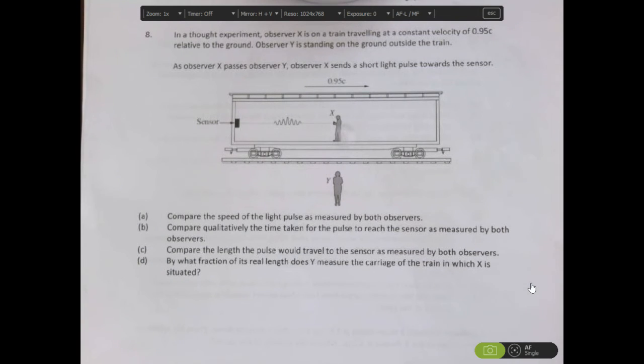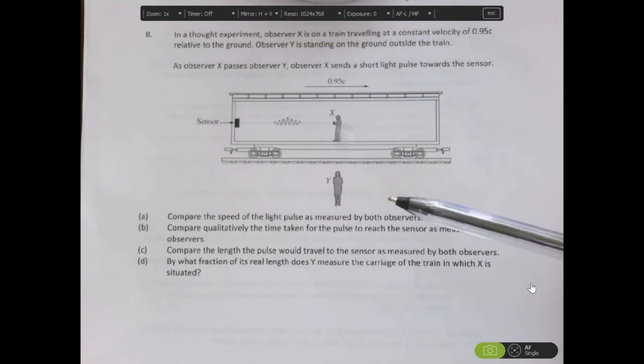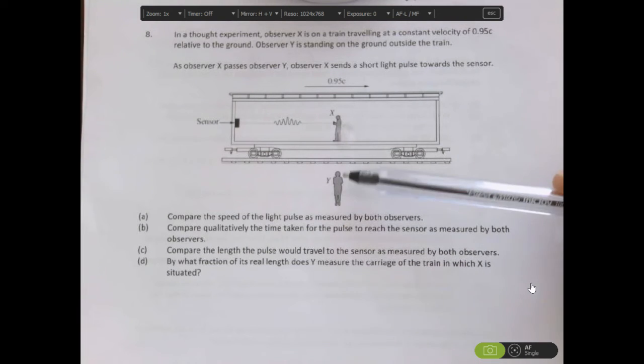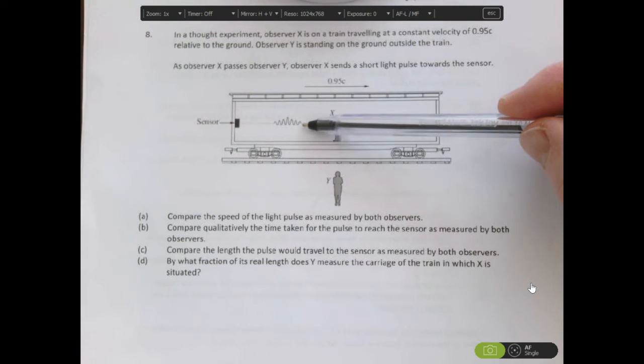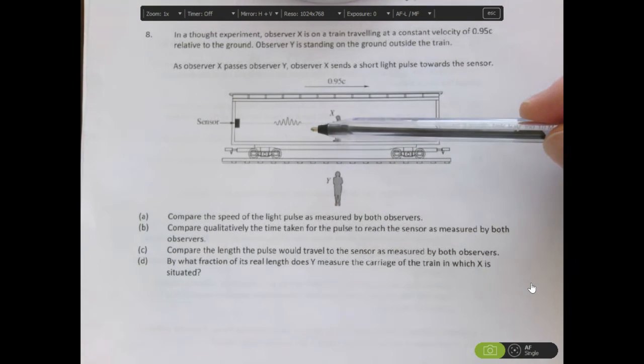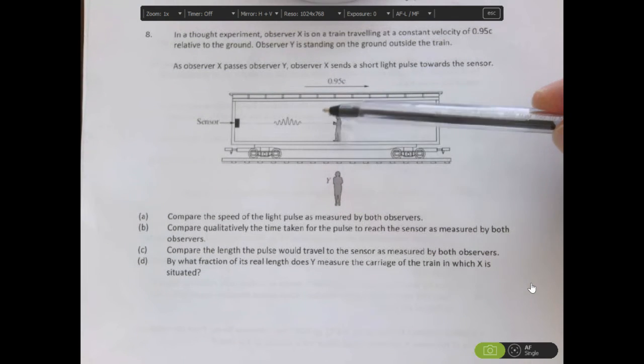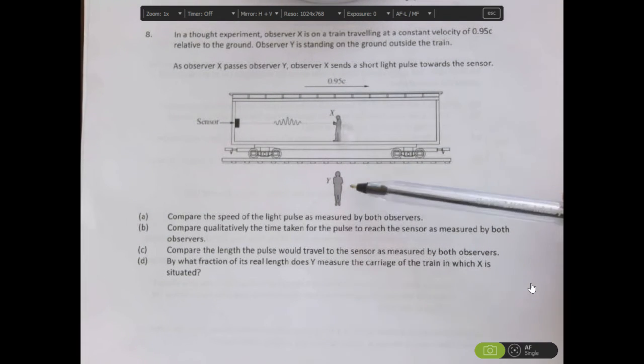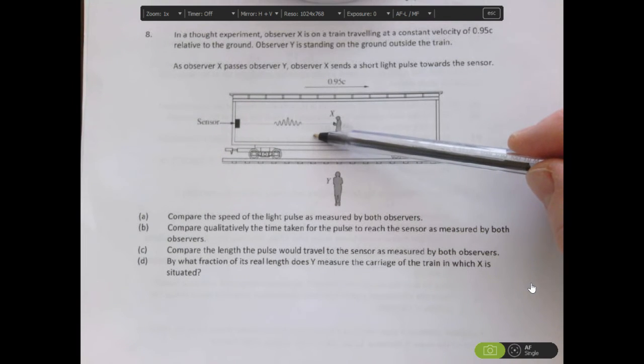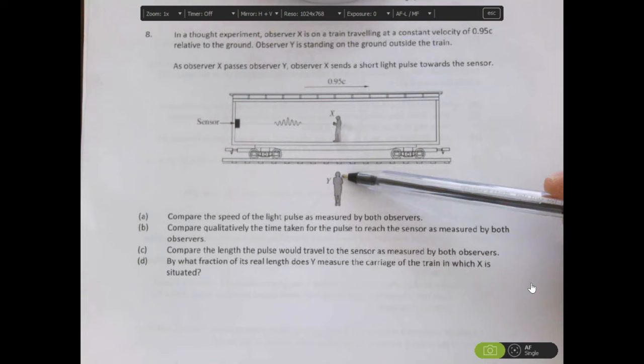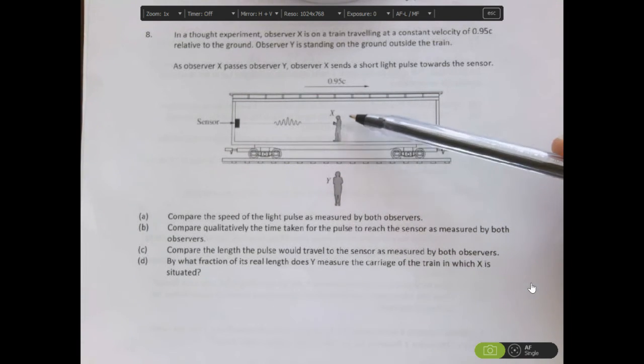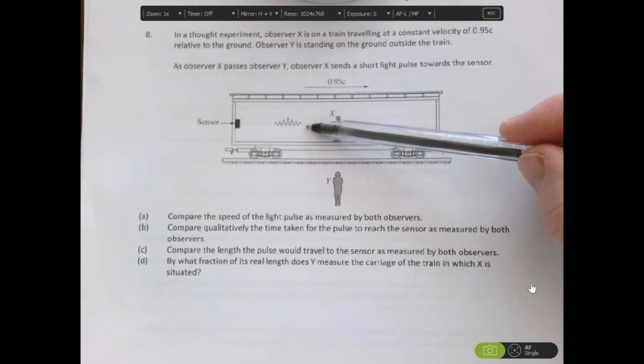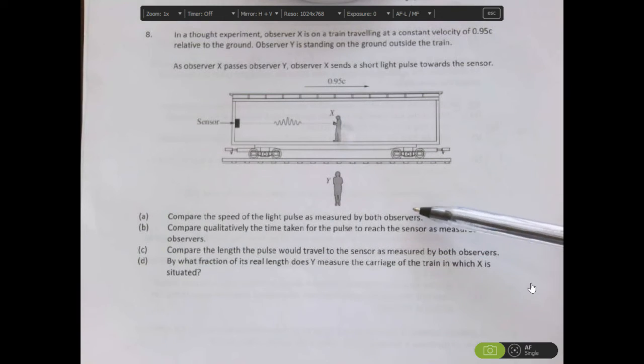Question 8 says to compare the speed of light and the light pulse as measured by both X and Y. Well, this is a simple one because X measures the speed of light in their frame of reference as the speed of light, according to the first postulate. And Y measures the speed of light in all frames of reference, doesn't matter if it's theirs or anyone else's, as also the speed of light. So comparing the speed of light in both frames of reference, they are the same.